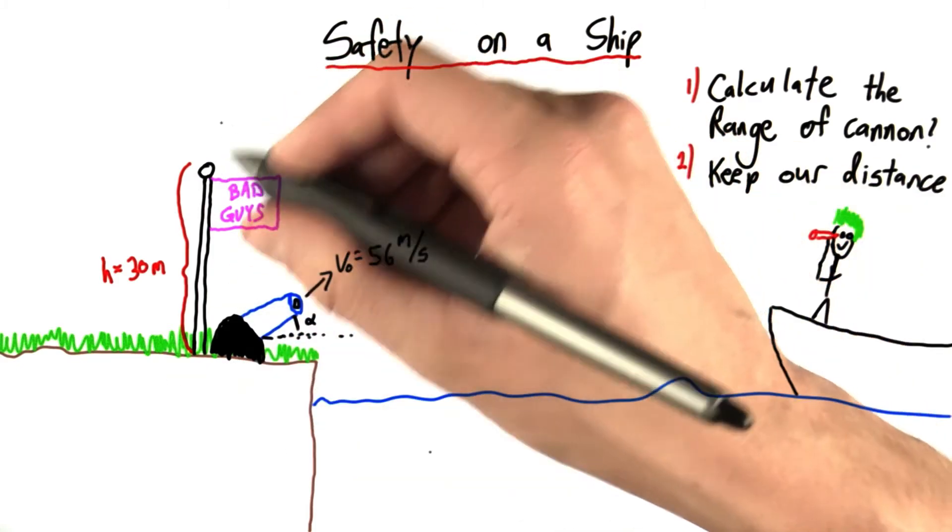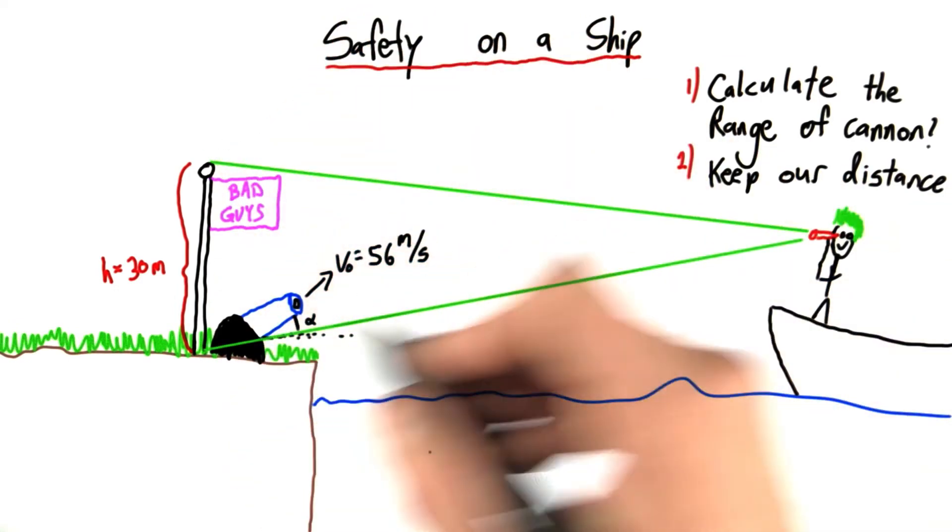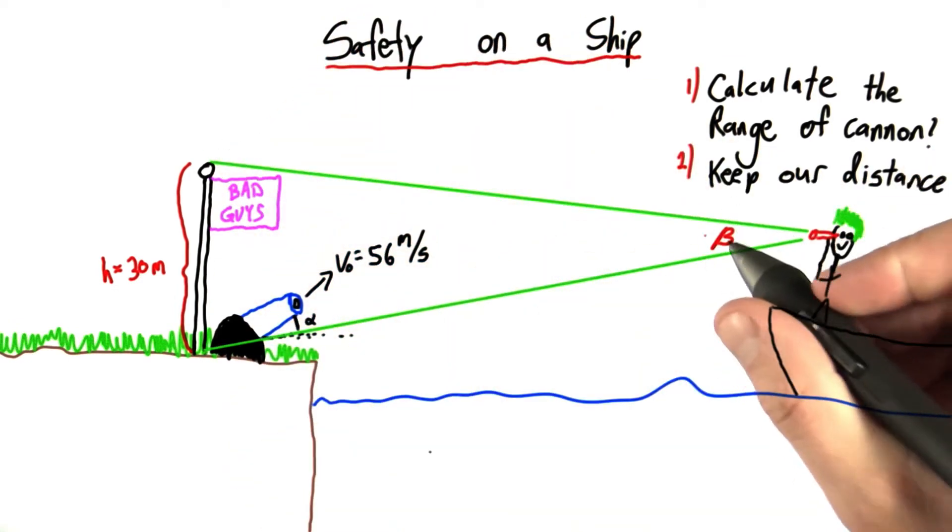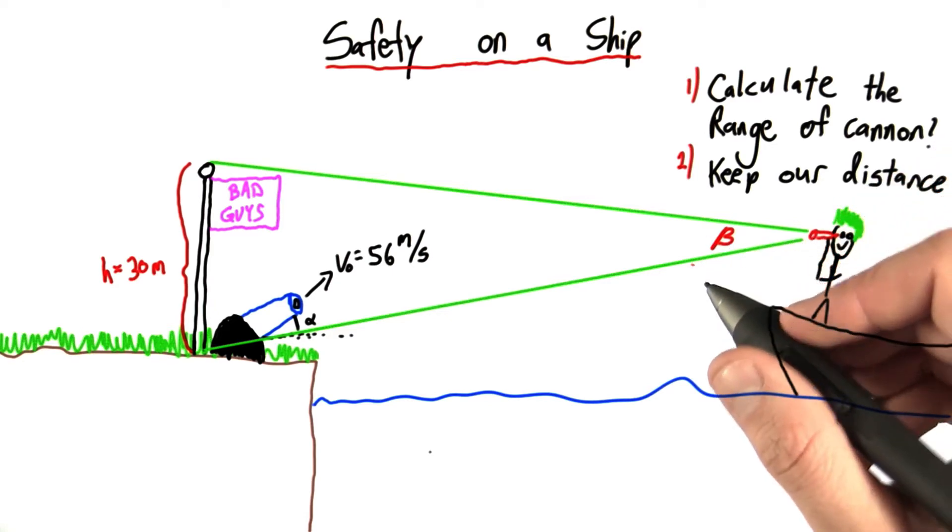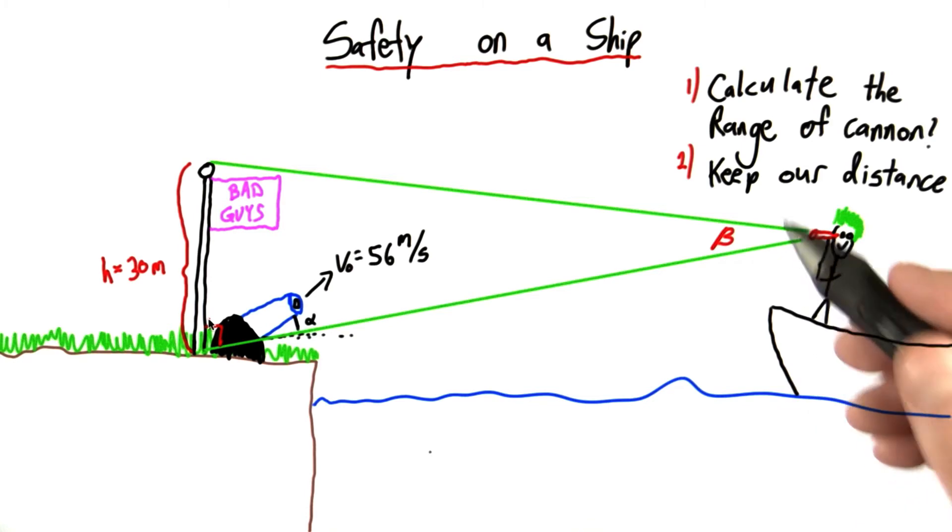Well, luckily enough, there's this flag pole. If we look from the top of this flag pole to the bottom, we can measure this angle beta. And as long as beta is pretty small, let's say less than 10 degrees, these are going to be very close to right angles, and we can do some trigonometry.